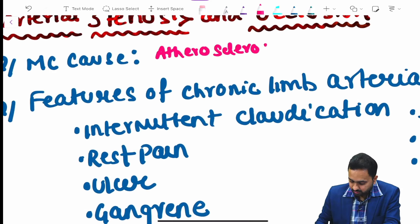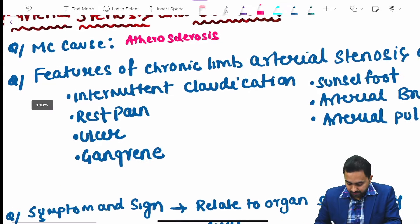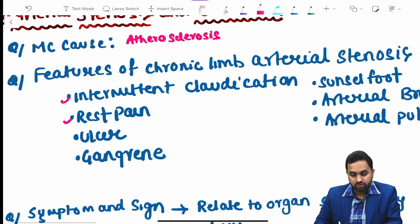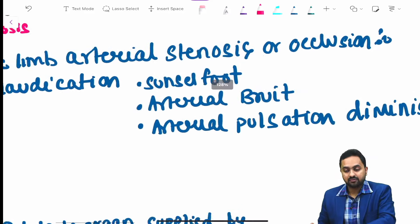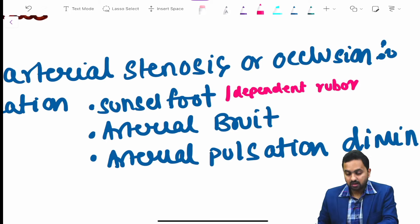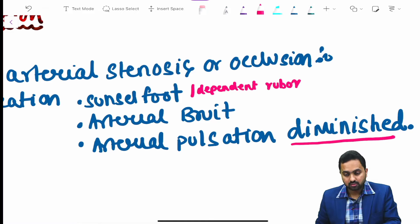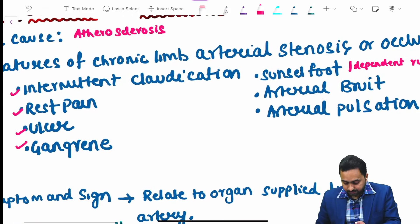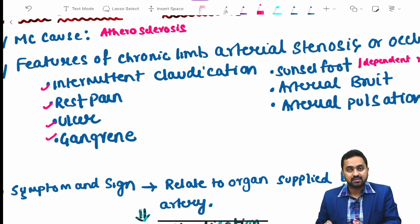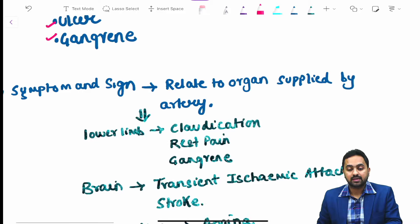What are the features of chronic limb arterial occlusion or stenosis? It presents with intermittent claudication, rest pain, ulcer, gangrene or sunset foot which is dependent rubor, arterial brood and arterial pulsation which is usually diminished. The symptoms and signs usually relate to the organ supplied by the artery.